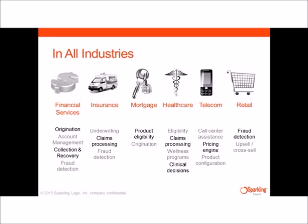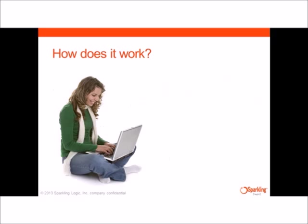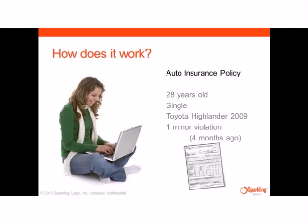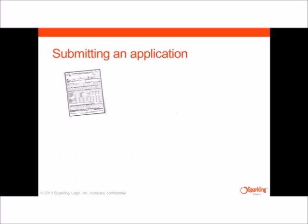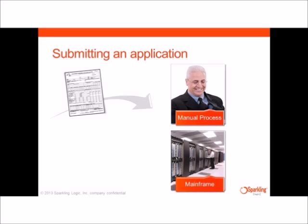Let's focus on just one use case and see how it works. Anna just bought a used car and shops for an insurance policy. She is 28, single, and now owns a Toyota Highlander 2009. She had one minor violation, but it was four months ago. As she submits the application, the insurance company can start processing it. Underwriters may review the application manually, but most likely a computer system will do the work.